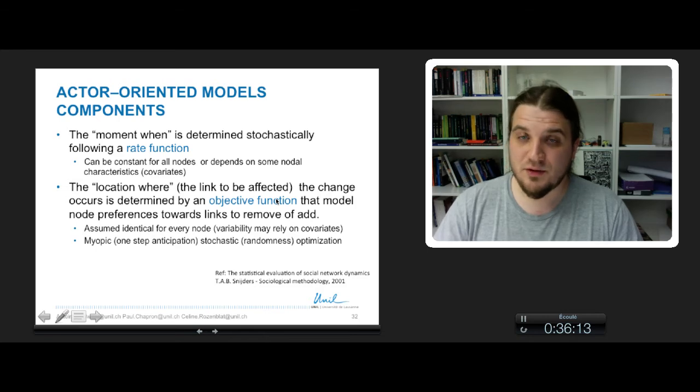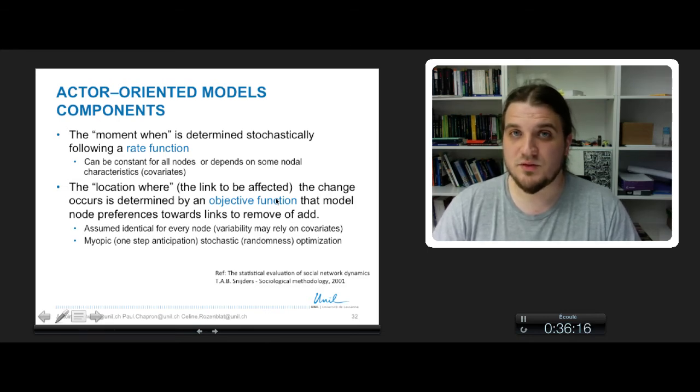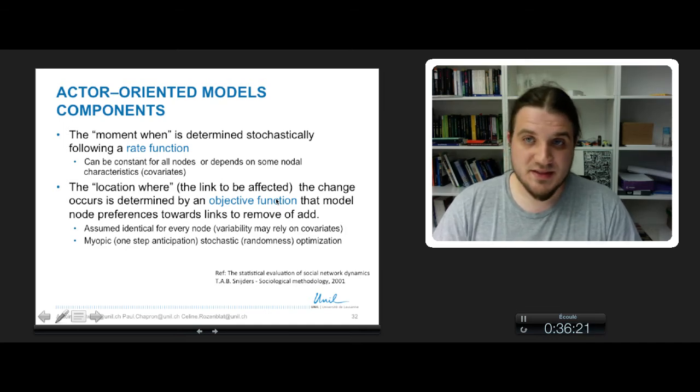But for geographical networks, nodes are space units or firms. And if you take, for example, a network of cities, you cannot say that a city has some preferences to create some link with another city.